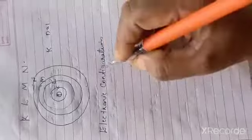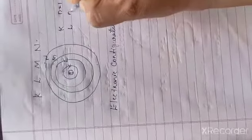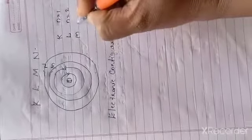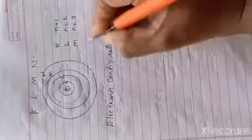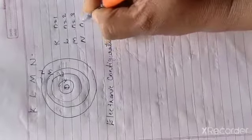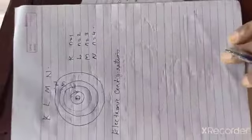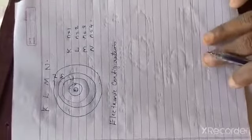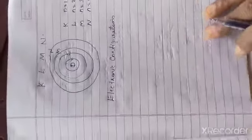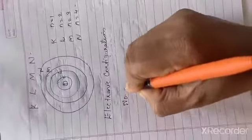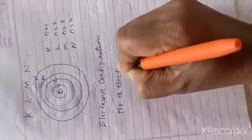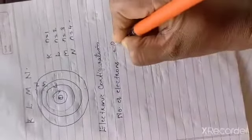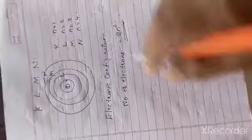K-shell is the first shell, so n is equal to 1. L is the second shell, n is equal to 2. M is the third shell, and N is the fourth shell. Each shell can hold a particular number of electrons, found using the equation: number of electrons in each shell is equal to 2n squared.